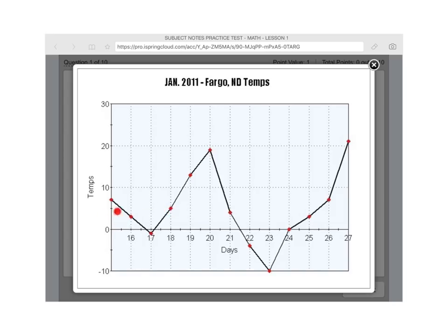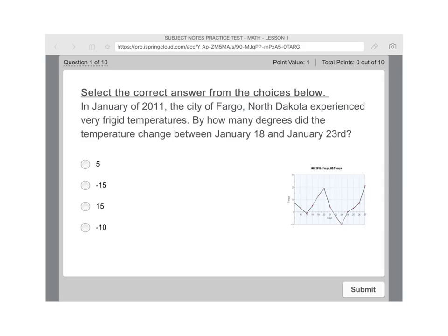The temperature is, we're going to say it's five. And then the 23rd, the temperature is negative 10. Okay. So remember those numbers, five and negative 10. Okay. Now I'm going to close that up.